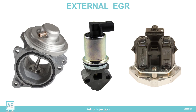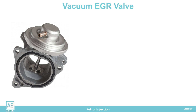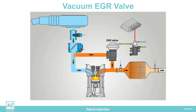There are three different types of external EGR systems. The oldest type is the vacuum-controlled EGR, which consists of a vacuum valve and an electromagnetic valve. The engine control unit, through the electromagnetic valve, controls the operation of the vacuum valve, which opens and closes the exhaust gas flow into the intake manifold.